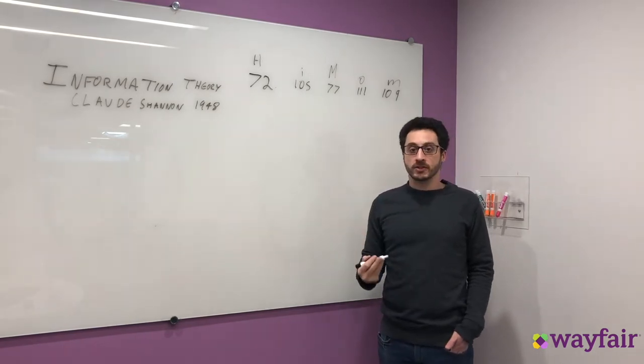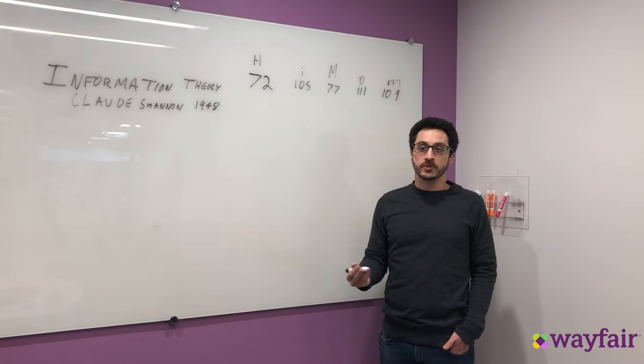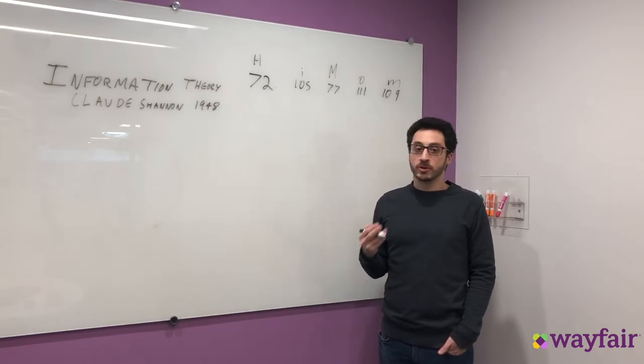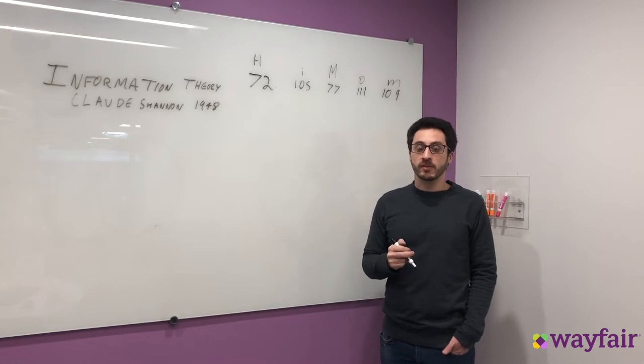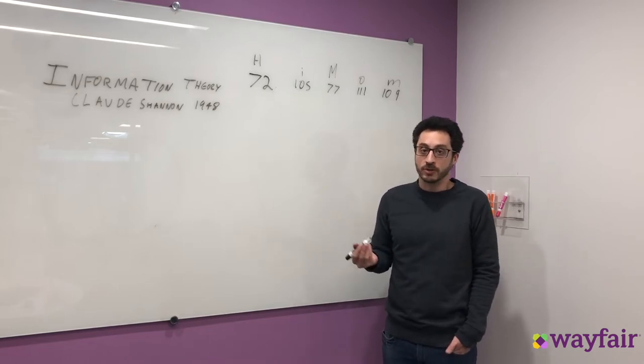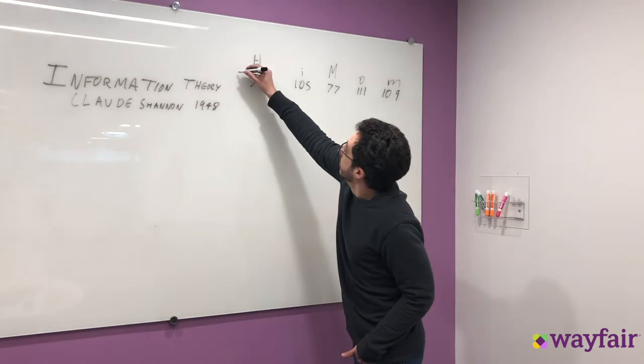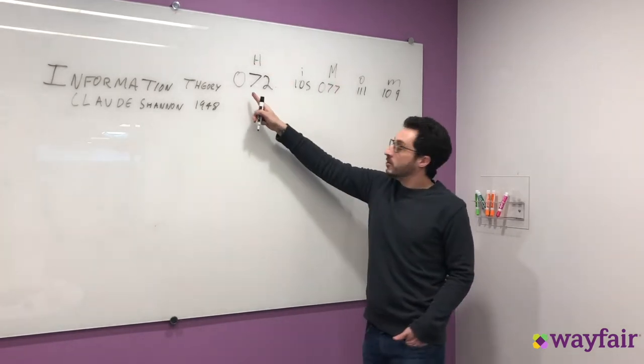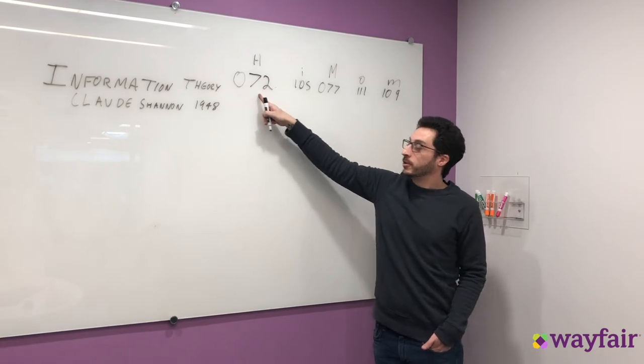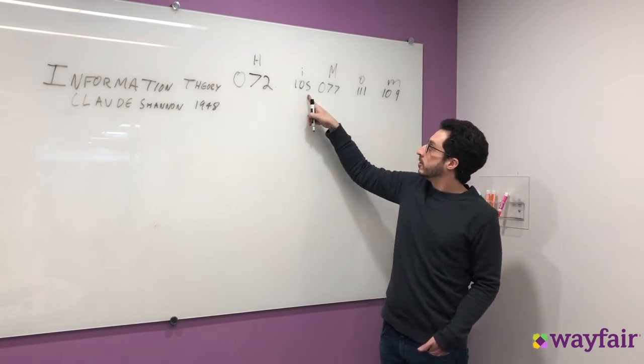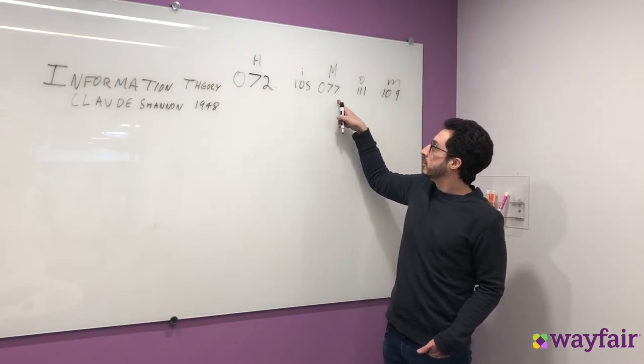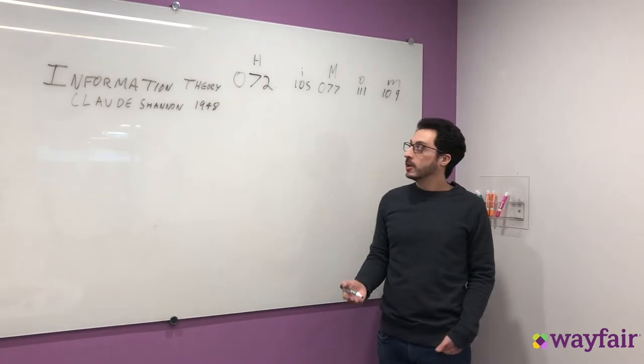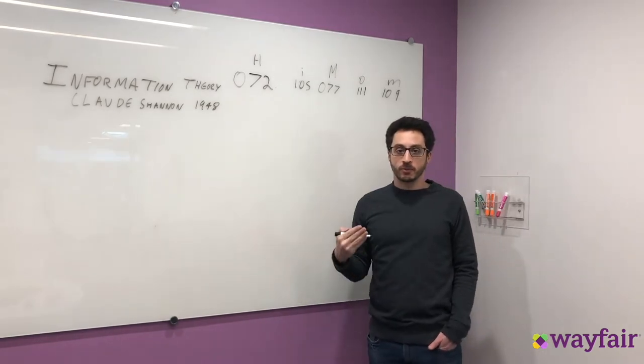So ASCII solves this problem in the following way. First we observe that all the numbers in the code book are between 0 and 255, and therefore you can write them all down using three digits. So what I need to do is pad these. And so now this is unambiguously, the first three is 72, the next three is 105, the third three is 77, and so on. So that is a fixed width encoding.